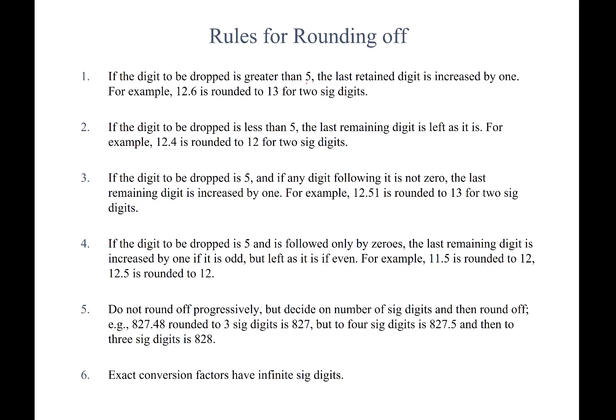There are six rules for rounding. Rule 1: if the digit to be dropped is greater than five, the last retained digit is increased by one. For example, 12.6 rounded to two digits — you drop 6, which is greater than 5, so 12.6 becomes 13. Rule 2: if the digit to be dropped is less than five, the last retained digit stays as it is. For example, 12.4 rounded to two digits — drop 4, which is less than 5, so it becomes 12.